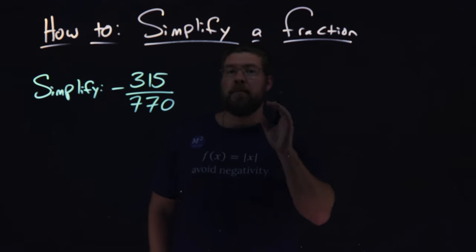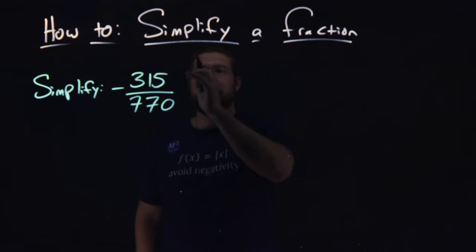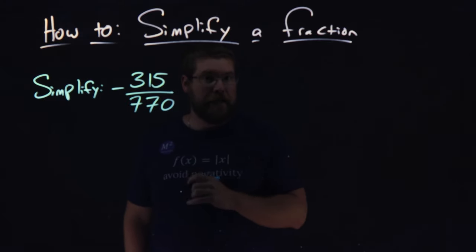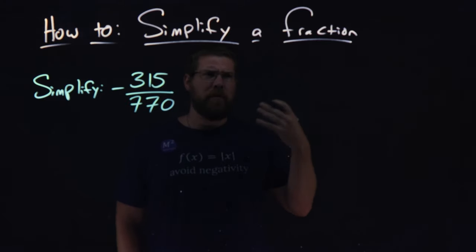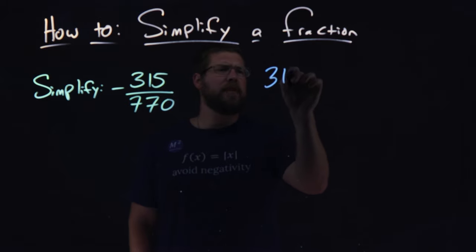So what I want to do is find the product of prime numbers for each one of these numbers, the numerator and denominator. So we've done this before with a factor tree. So let's take 315 first.